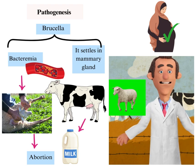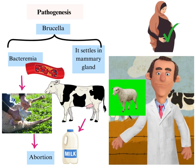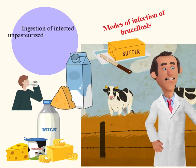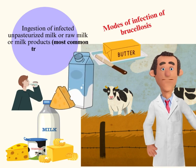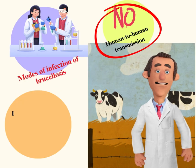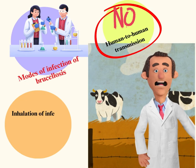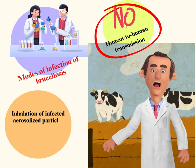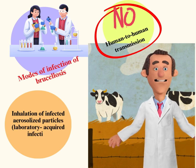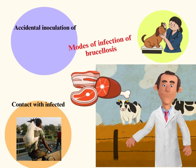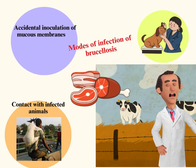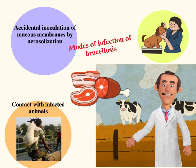Brucella does not cause abortion in humans because the human placenta does not contain erythritol. Modes of infection include: ingestion of infected unpasteurized milk, raw milk, or milk products — the most common transmission — and inhalation of infected aerosolized particles, which is a laboratory-acquired infection. Importantly, there is no human-to-human transmission. Other modes include accidental inoculation of mucous membranes by aerosolization and contact with infected animals.